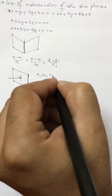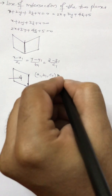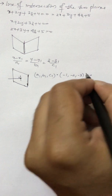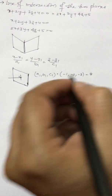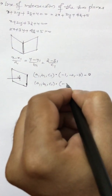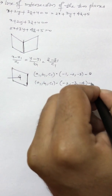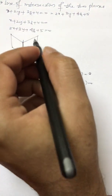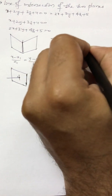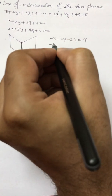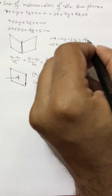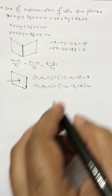So a1, b1, c1 dot with the DRs of the normal — which are minus 1, minus 2, minus 3 — equals 0. This is with respect to the first plane. With respect to the second plane, a1, b1, c1 dot minus 2, minus 3, minus 4 equals 0. Why are we writing minuses? Because minus x minus 2y minus 3z equals 4, and minus 2x minus 3y minus 4z equals 5 — when writing distance on the RHS, it should always be positive.